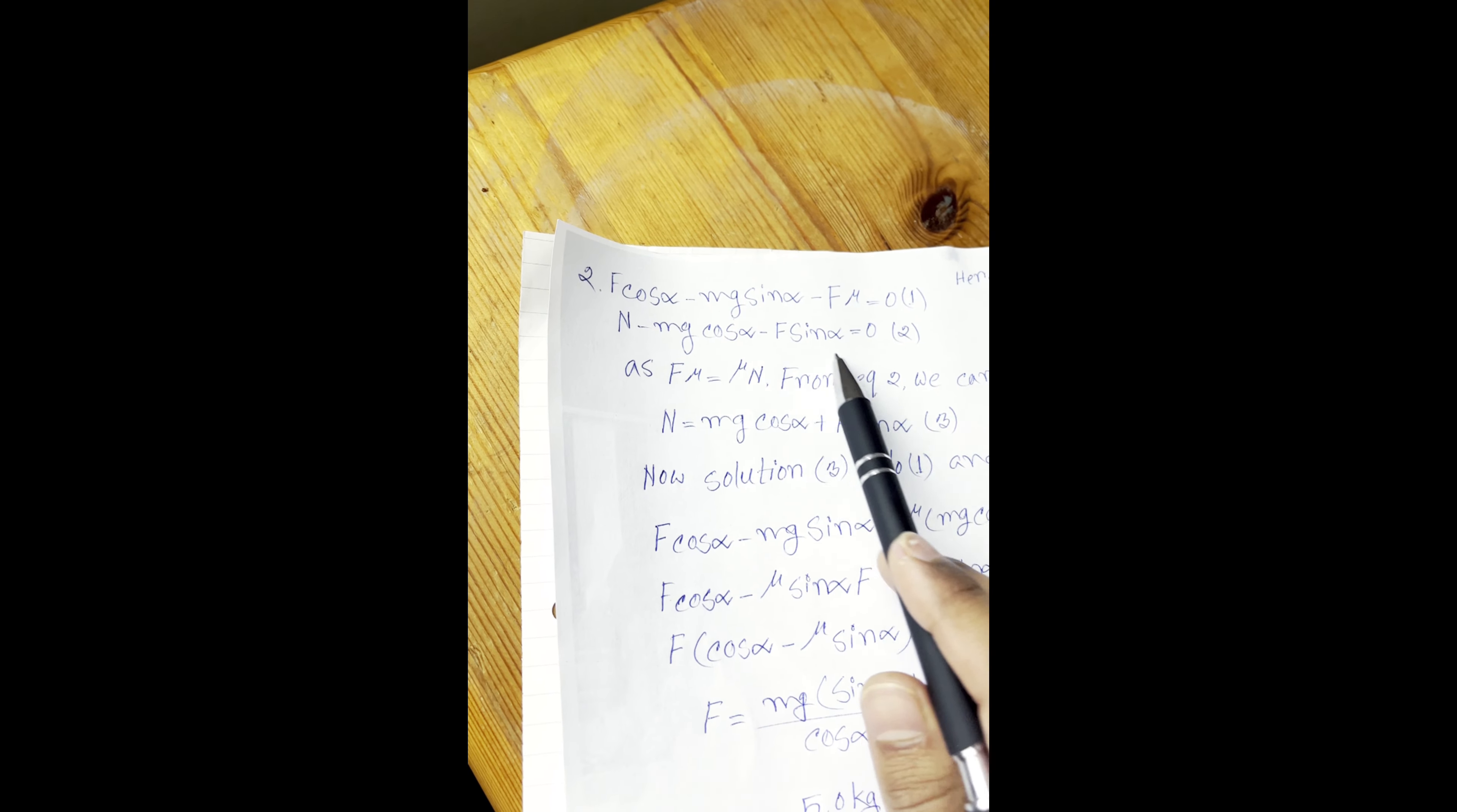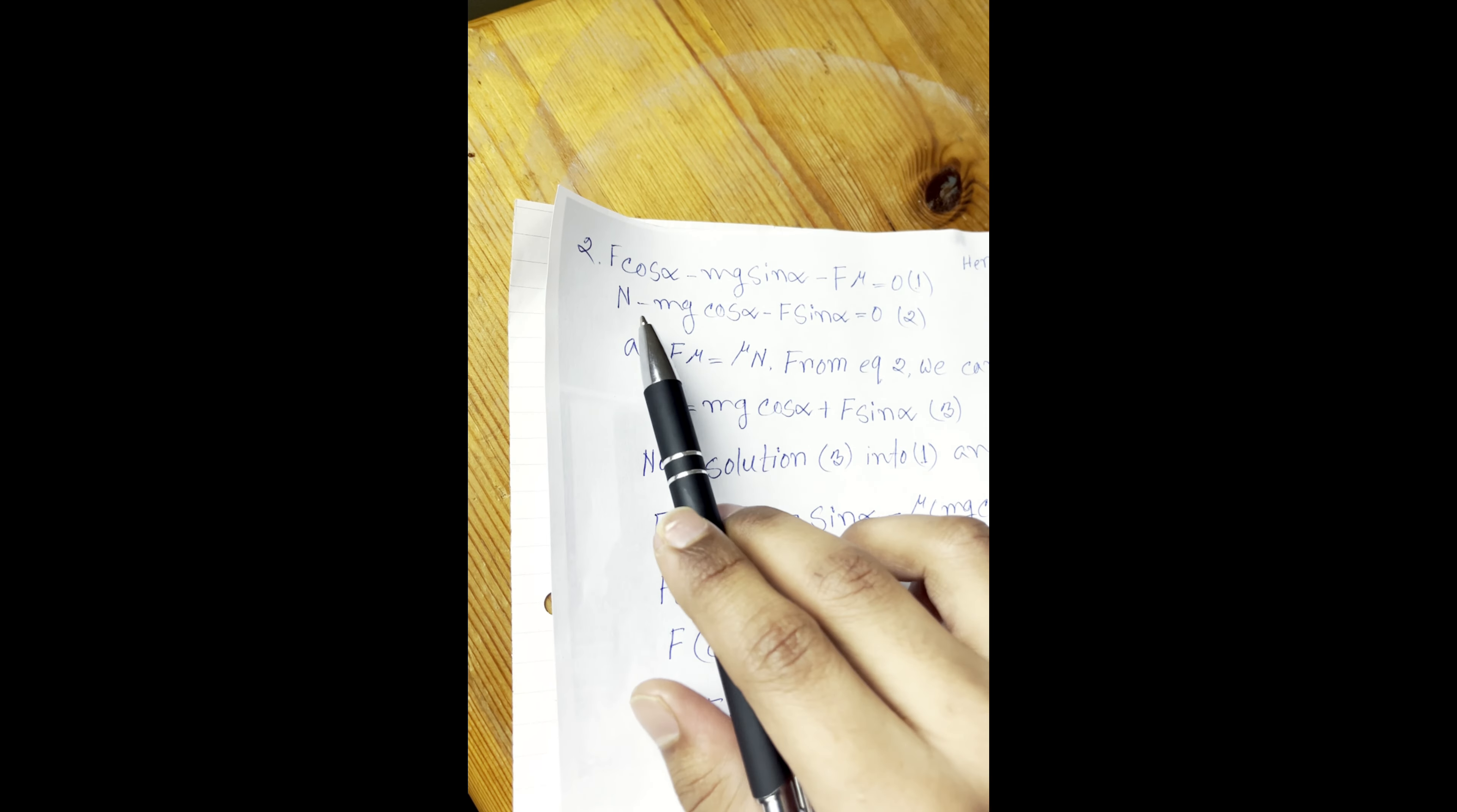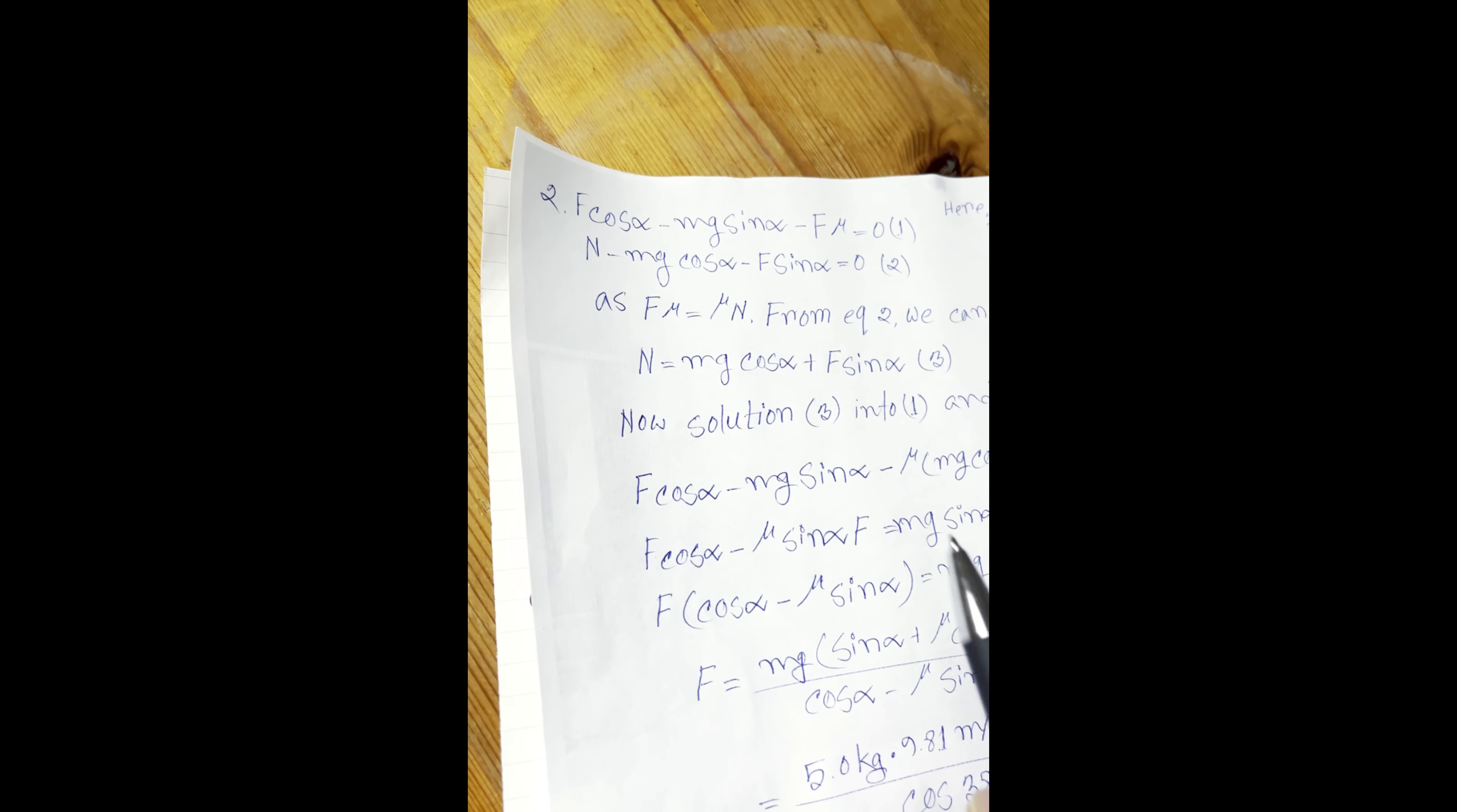We can say F mu equal to mu N from equation 2, and we can do for N: N equal to mg cos θ plus F sin θ. It's the third equation we take from this. From this N we can make it N equal to mg cos θ minus F sin θ.